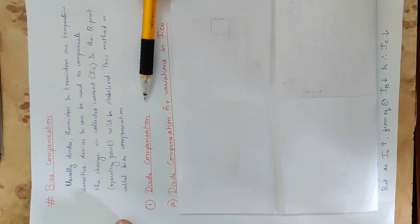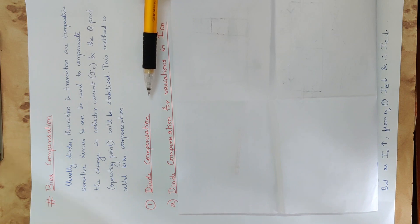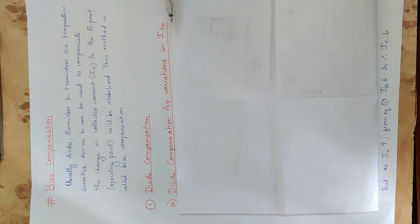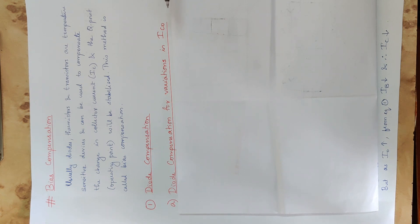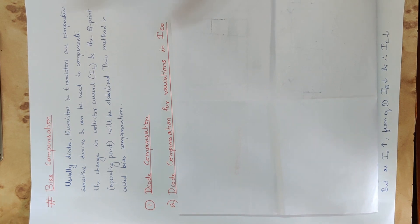Next we will start with diode compensation. We are going to do diode basics and then diode compensation for variations in ICO. ICO stands for Collector Leakage Current — this is the leakage current. We will start with the basics and then cover two methods.